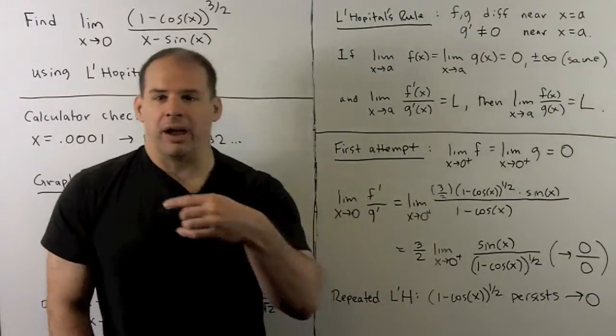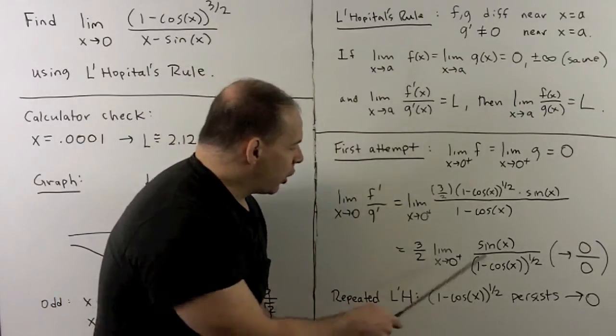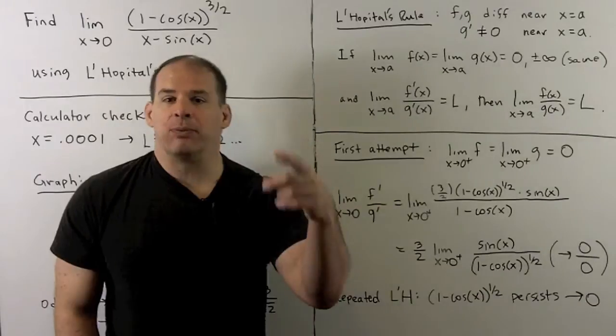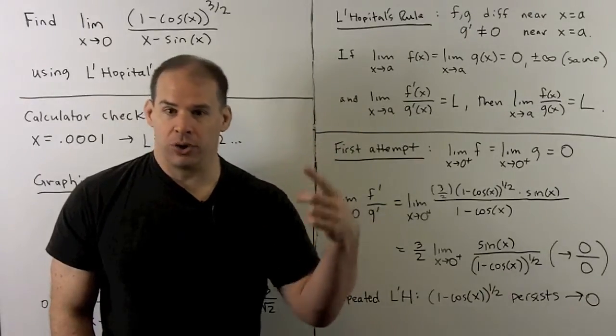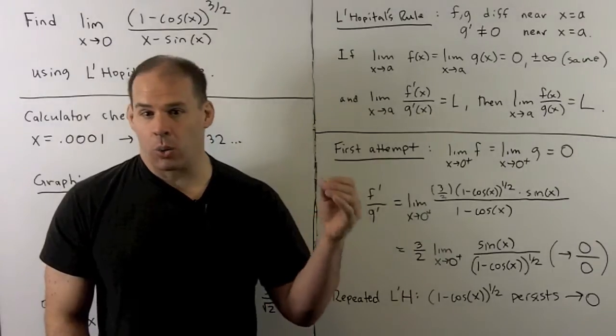Now, what you'll note, after you do two or three of these, you're never going to get rid of this term, one minus cosine of x to the one-half power. So it's going to keep forcing your limit to go to zero over zero. A direct approach with L'Hôpital's rule is not going to work here.